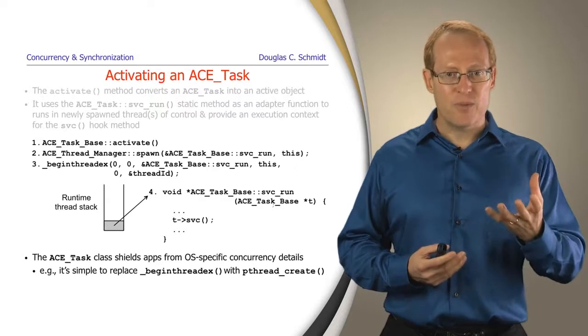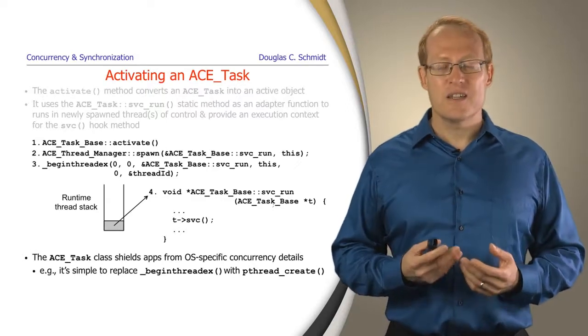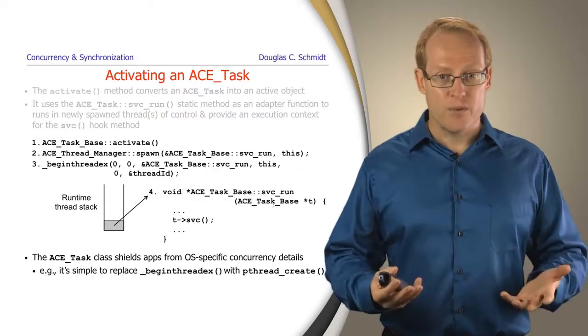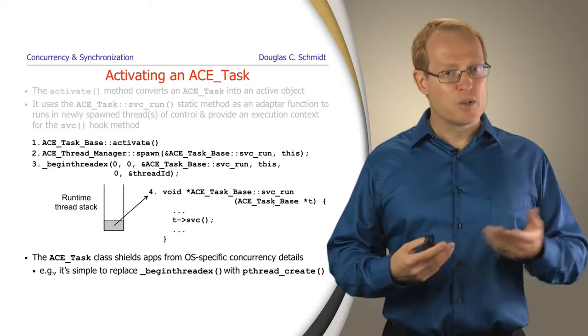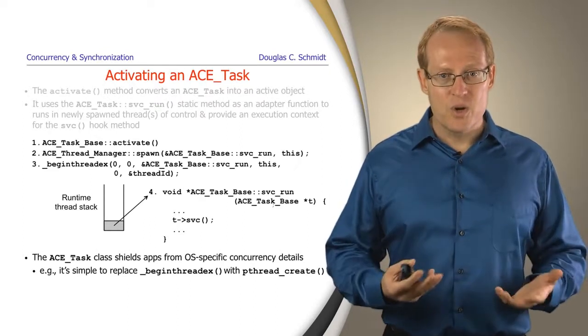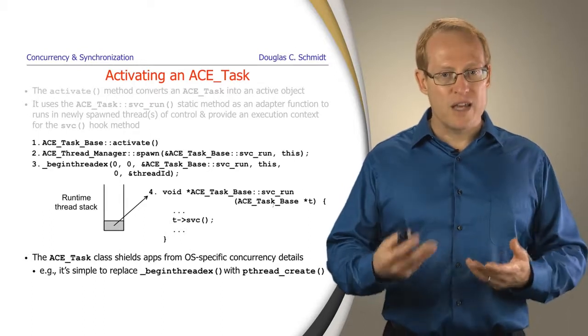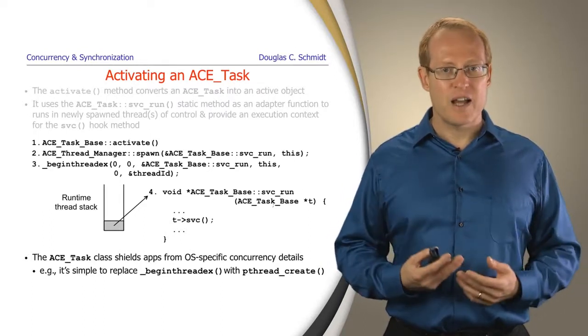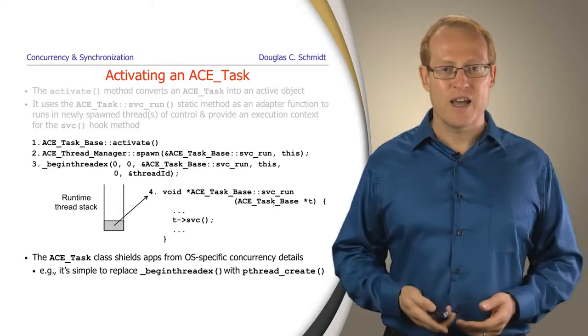The main difference between a Java thread and an ACE task is an ACE task can spawn a pool of threads as opposed to one thread, and secondly, an ACE task can also have a message queue associated with it, so it can process and store those requests and do various kinds of patterns like active object or half sync, half async.